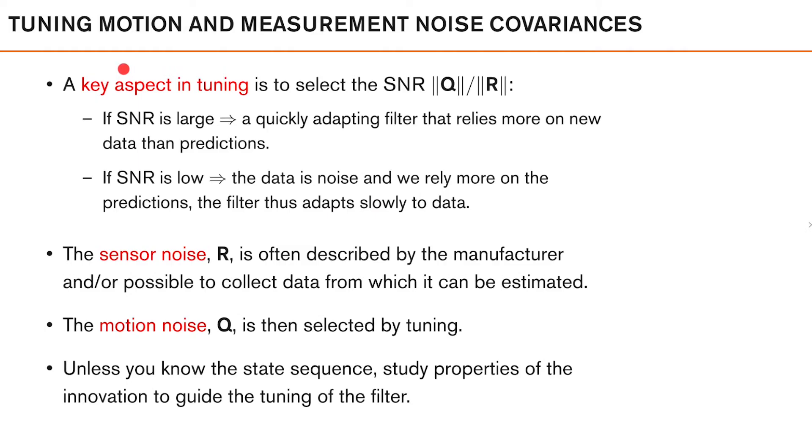So, to summarize filter tuning, a key aspect in tuning is to select the ratio between the process noise and the measurement noise. This ratio is sometimes called the signal-to-noise ratio, or SNR.